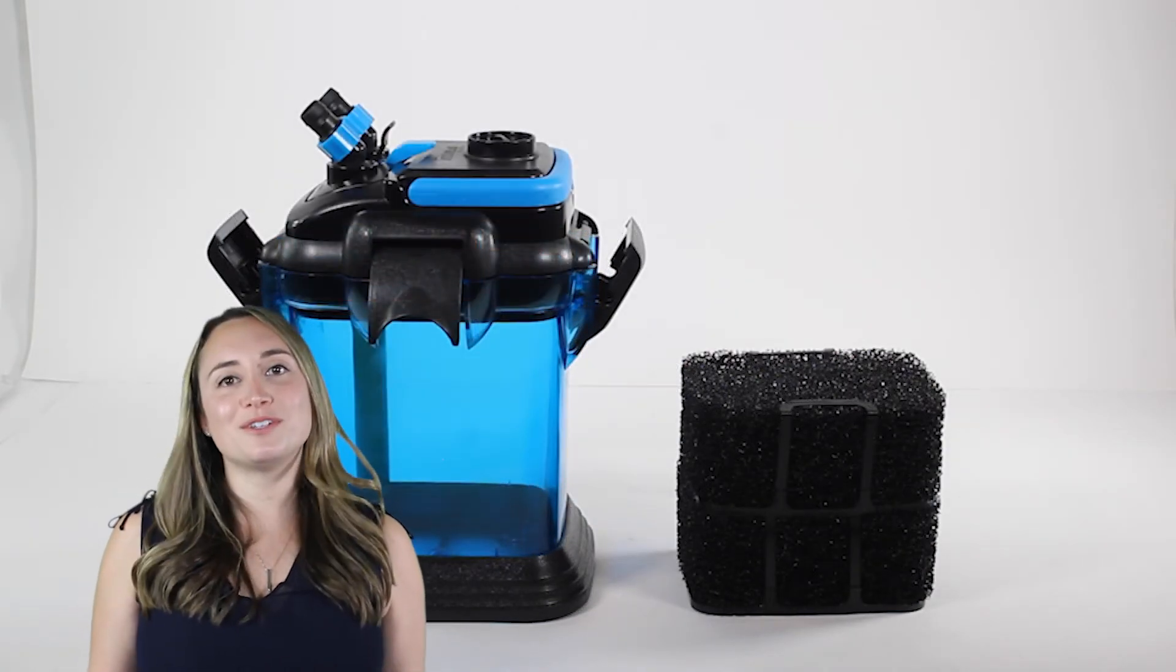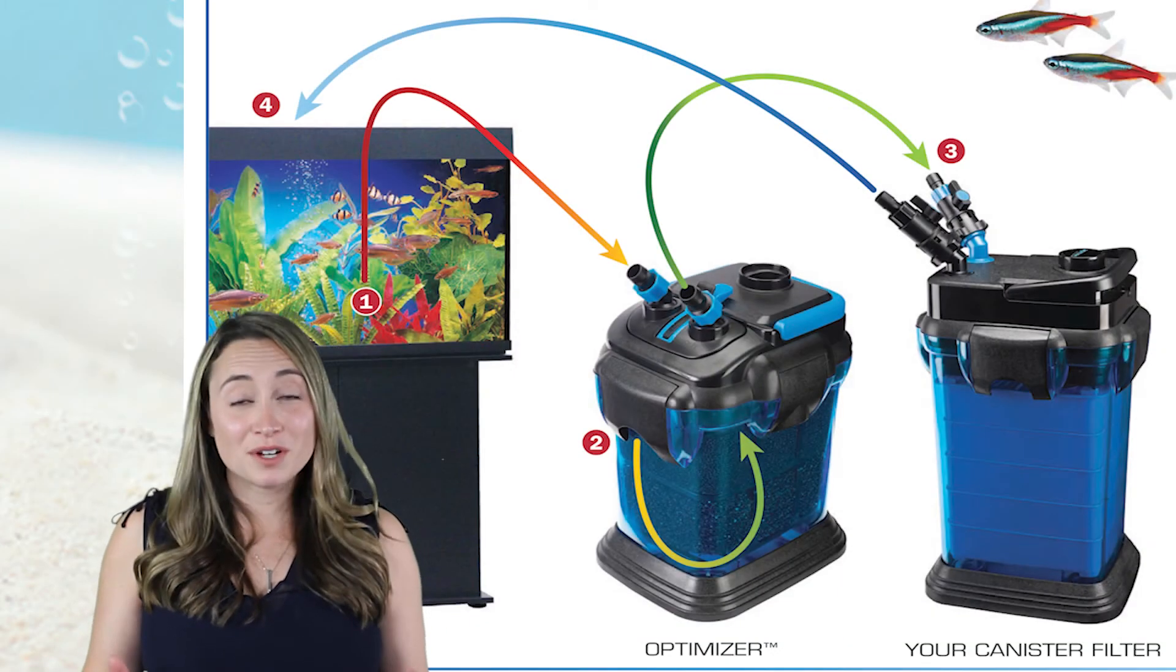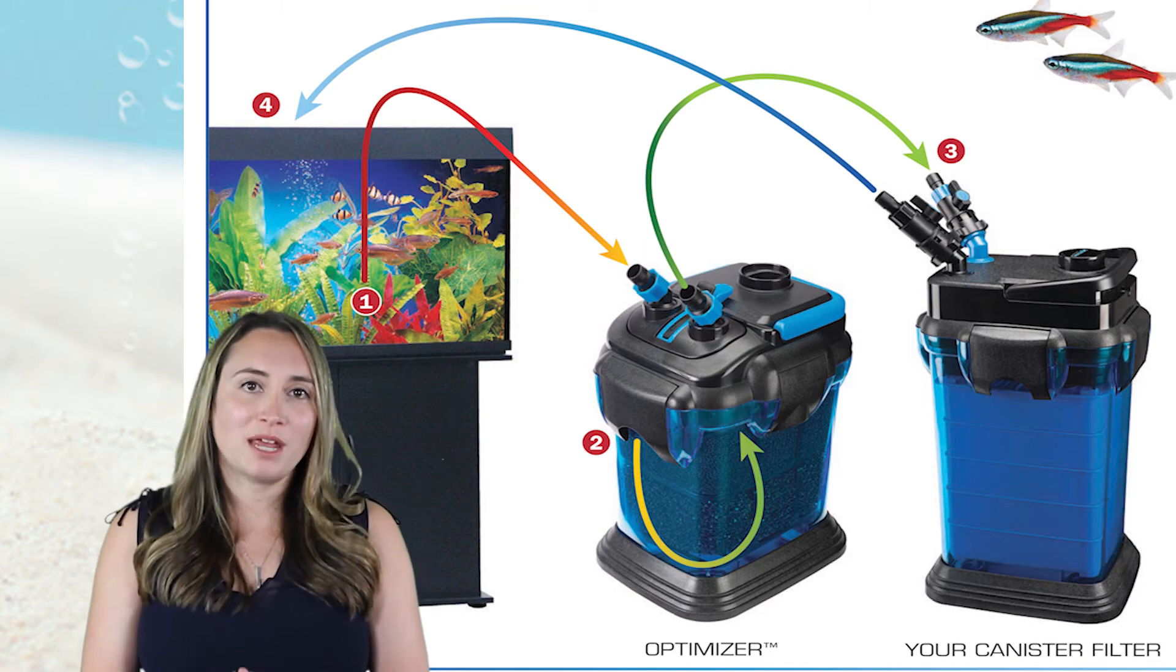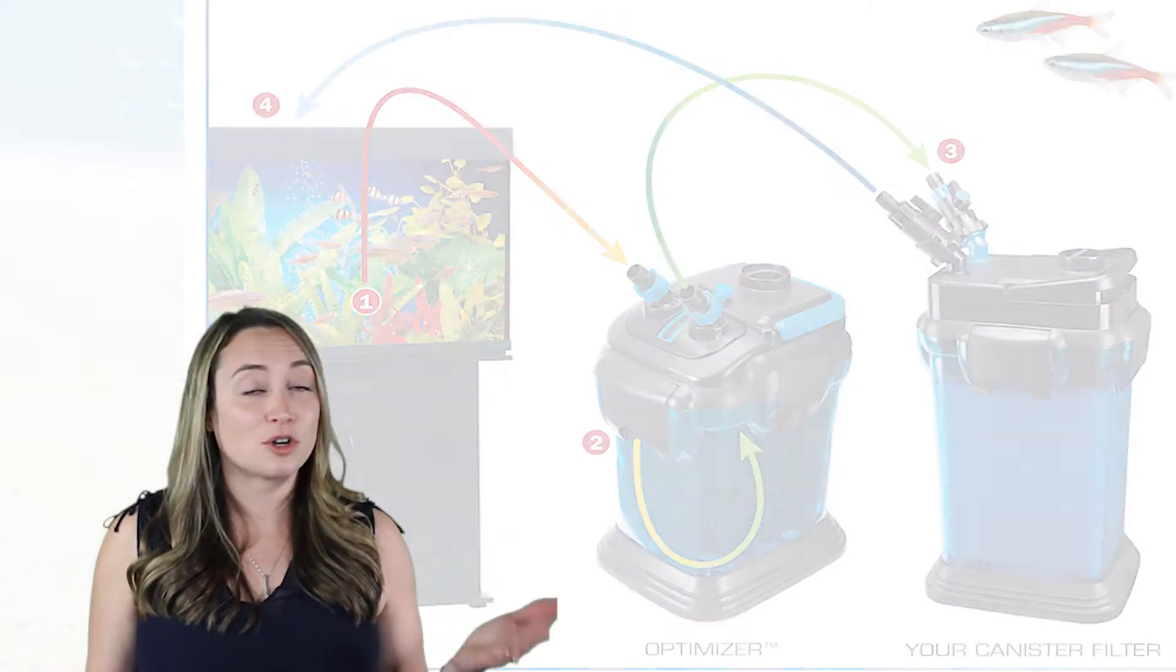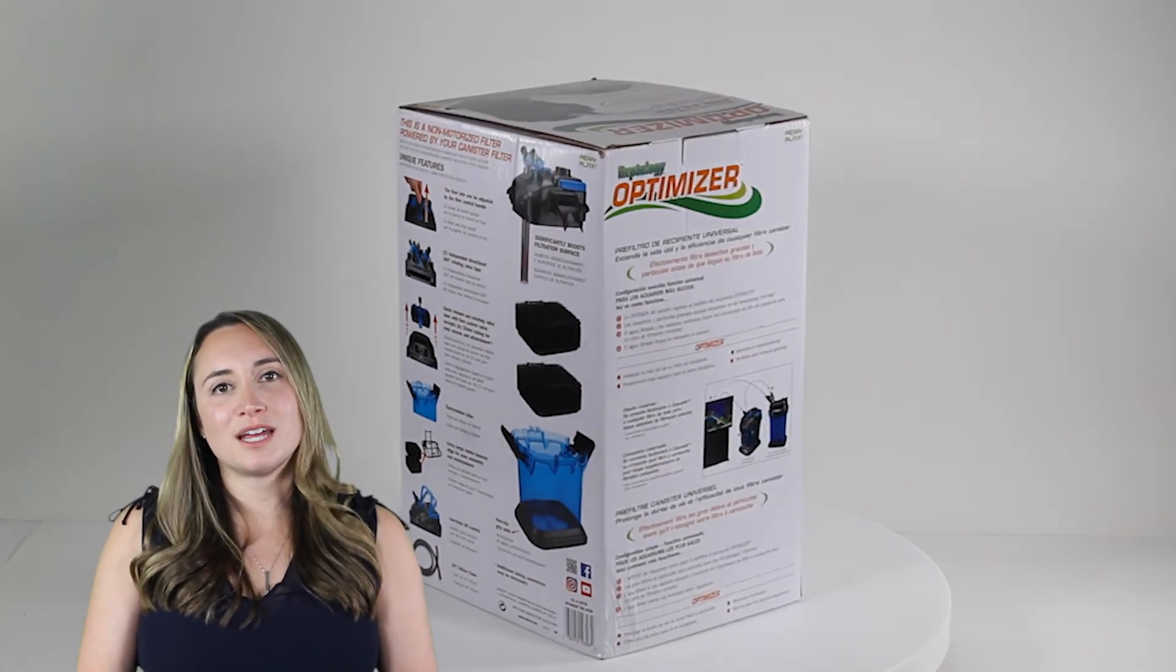We've come out with two different versions of this item. One for reptile and one for aquatic and the main difference is the media that it contains which is specifically made for the type of waste that a turtle or fish put out. Now this item is essential for those dirty tanks. Worry no more, your canister will run smoothly, just add the Optimizer.